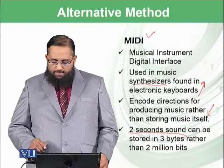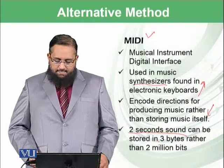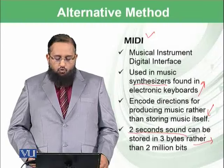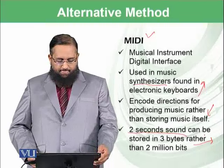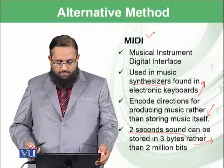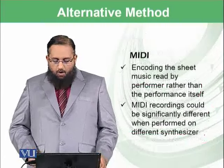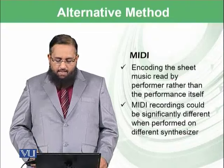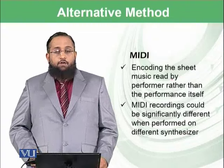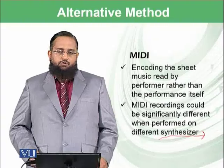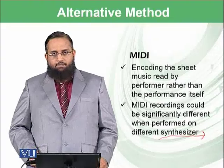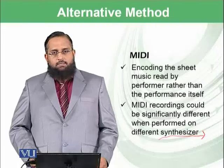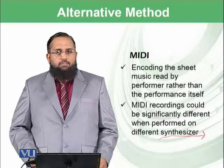Using MIDI, a 2-second sound can be stored in just 3 bytes, whereas the amplitude sampling method requires 2 million bits for 2 seconds. However, MIDI encodes the sheet music to be read by a performer rather than the performance itself, and MIDI recordings could sound significantly different when played on different synthesizers, meaning the quality can vary depending on the electronic keyboard or synthesizer used.